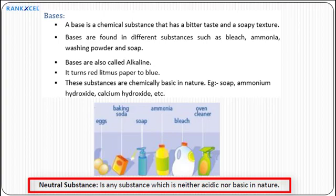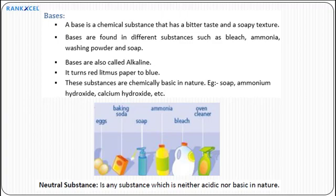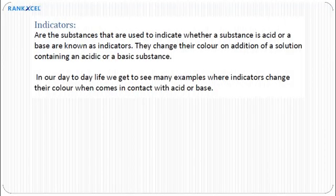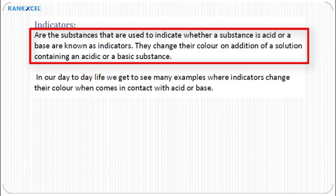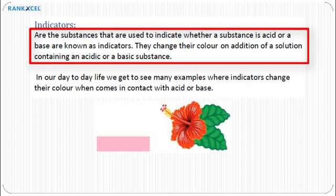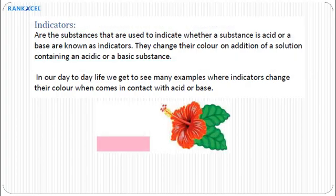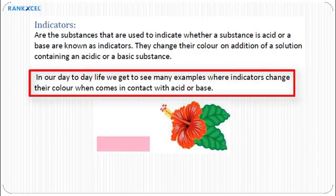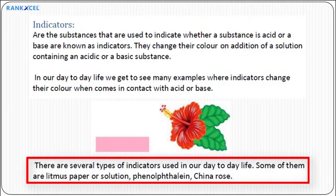A neutral substance is any substance which is neither acidic nor basic in nature. Indicators are substances used to indicate whether a substance is an acid or a base. They change their color on addition of a solution containing an acidic or basic substance. There are several types of indicators used in day-to-day life, some of them are litmus paper or solution, phenolphthalein, and china rose.